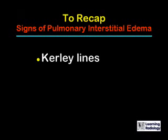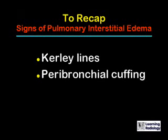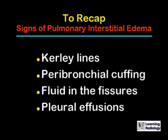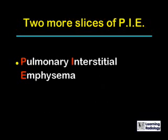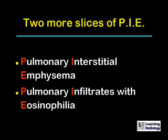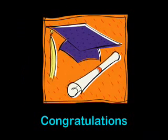To recap the signs of pulmonary interstitial edema, the reliable major findings are curly B lines and curly A lines, peribronchial cuffing, fluid in the fissures, and pleural effusions. Next time, we'll look at two more slices of PIE: pulmonary interstitial emphysema and pulmonary infiltrates with eosinophilia. Thank you.